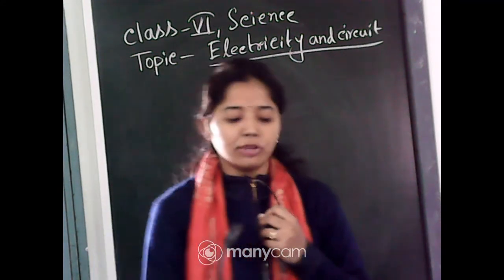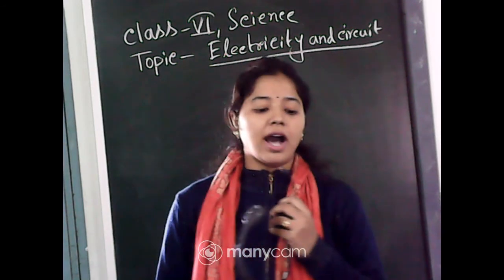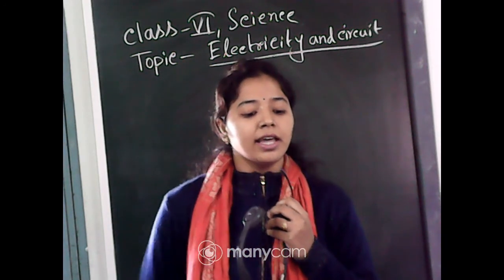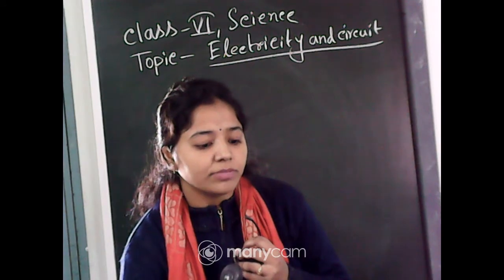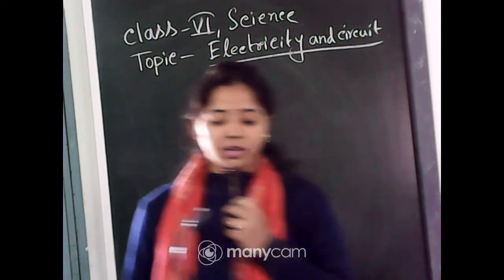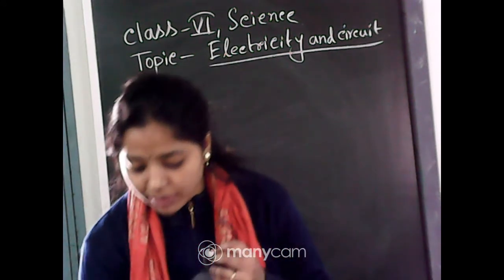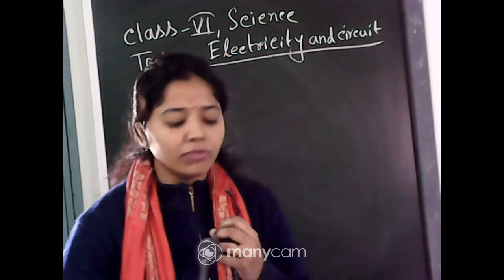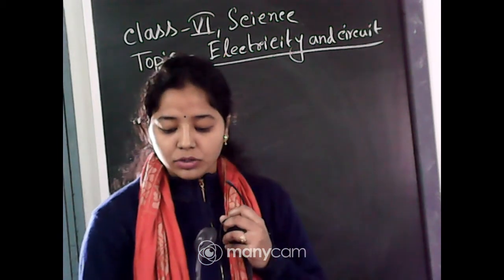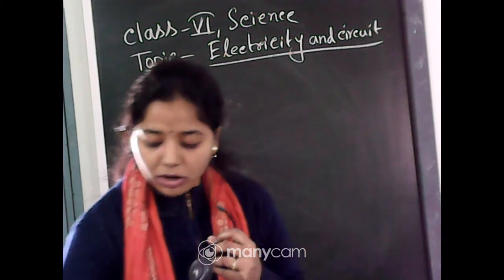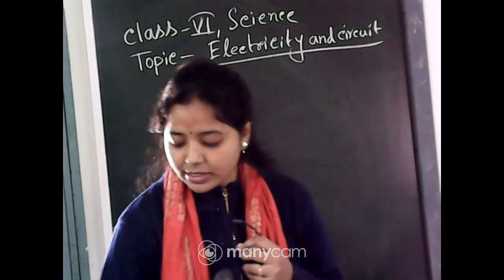So this is what we discussed in the previous class. We have also seen what an electric bulb is and how it functions. By seeing the diagram, we saw that the switch is on or off, and there are different symbols for switch on and switch off. We have also drawn an electric circuit. Page number 121 — everyone, page number 121.